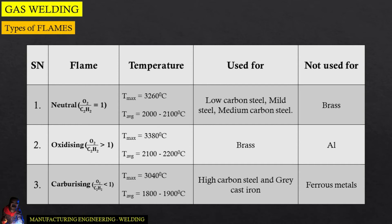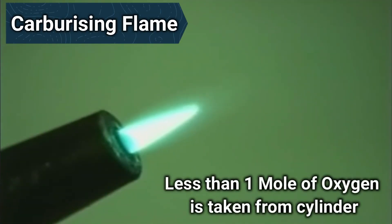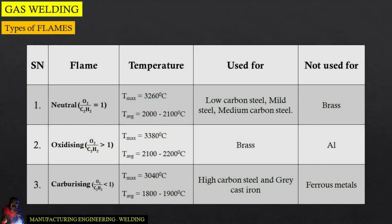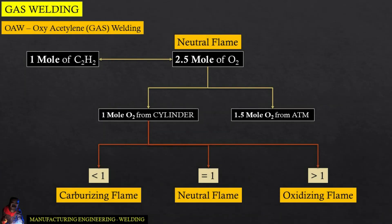Last but not the least, we have carburizing flame. In case of carburizing flame, the oxygen to acetylene ratio is lesser than one, meaning lesser than one mole of oxygen is fetched from the cylinder and the rest oxygen is taken from the atmosphere. One mole of acetylene requires 2.5 mole of oxygen for full combustion, and this 2.5 mole of oxygen is bifurcated between what is fetched from the oxygen cylinder and the atmosphere. This quantity is what decides the type of flame we are going to obtain.